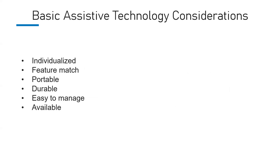When talking about assistive technology, it needs to be individualized. The fact that two employees have the same condition does not mean the same item will work for both of them. An individualized assessment helps you learn not just the limitations and the tasks to perform, but also the person's abilities, likes, and dislikes. We use a match approach where the features of the device match the needs of the person, the tasks they have to perform, and their potential.